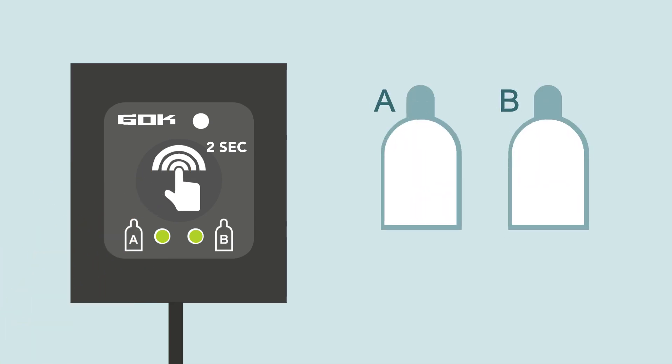Both gas cylinders are full and the operator extracts gas from one of the two. No matter if from cylinder A or cylinder B, two green LEDs signal that gas is available in both cylinders.